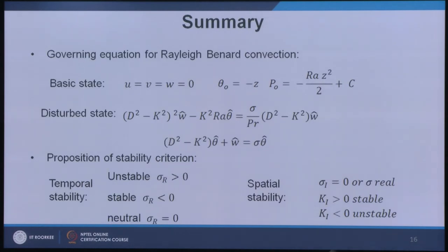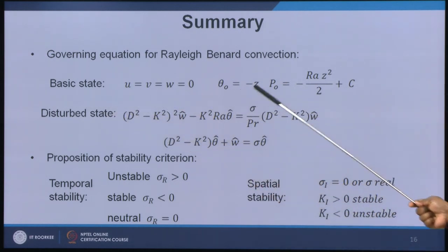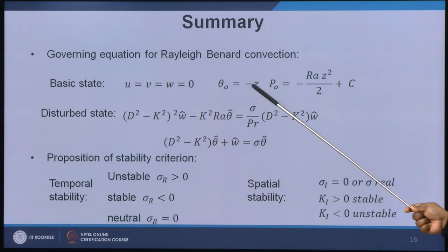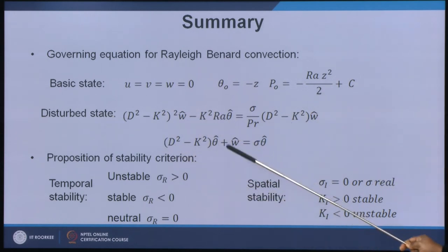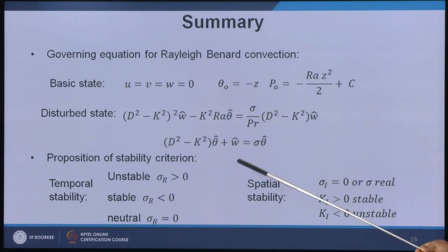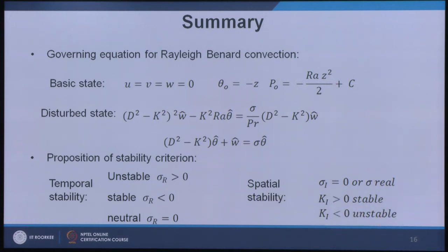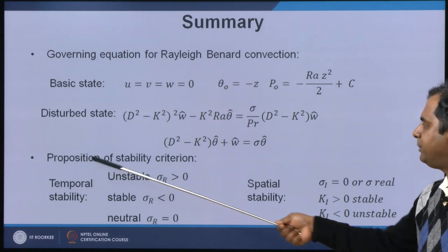To summarize: the basic state gives θ₀ and P₀ as functions of z. The disturbed state yields two equations in ŵ and θ̂, forming an eigenvalue problem. For temporal stability, σ_r < 0 is required; for spatial stability, k_i > 0. This is the linear stability analysis for Rayleigh-Bénard convection.